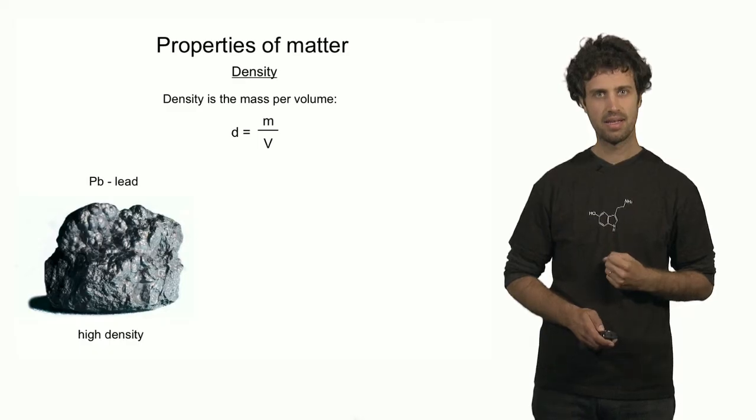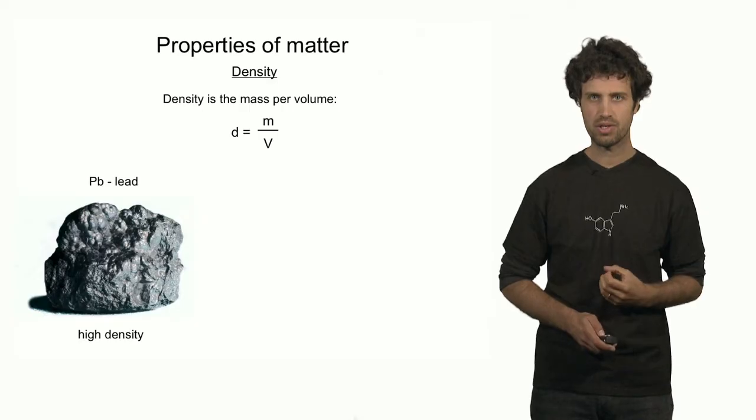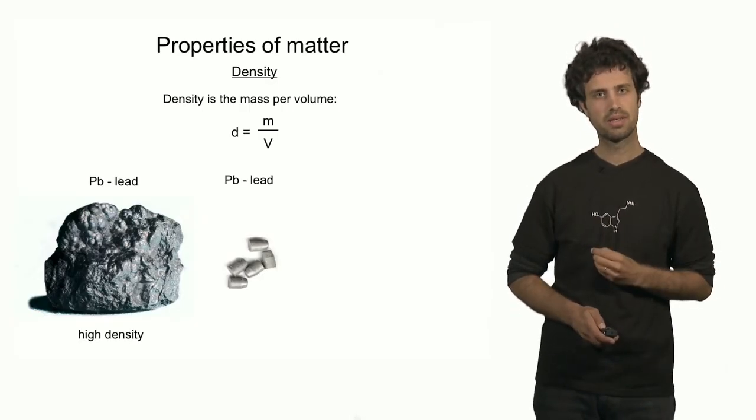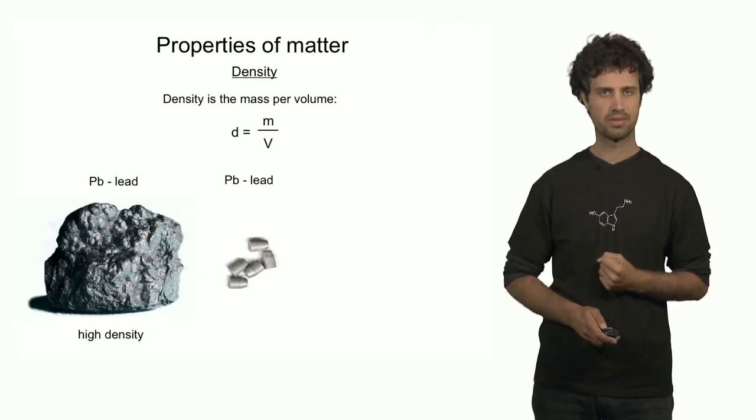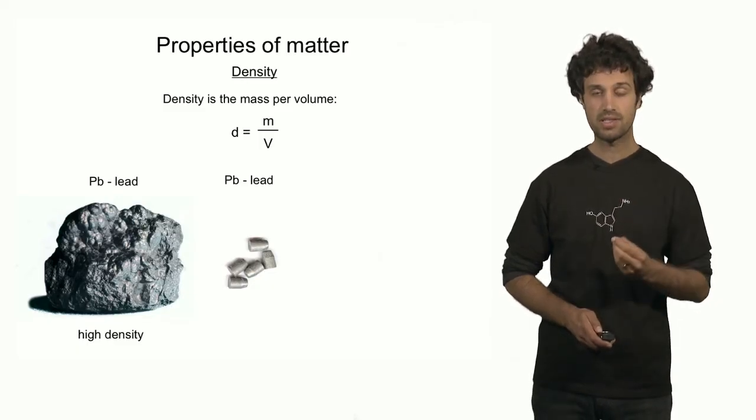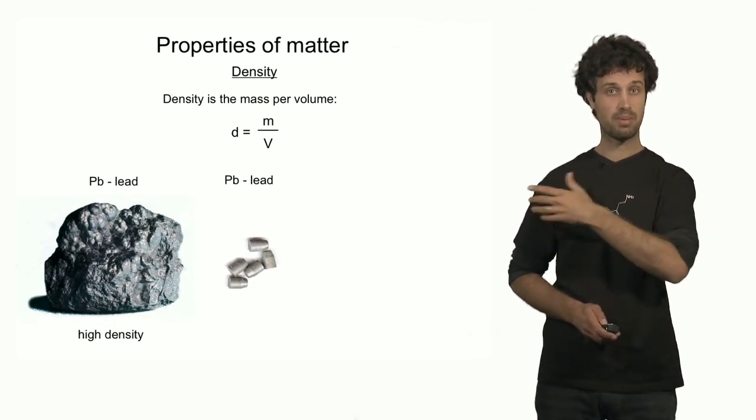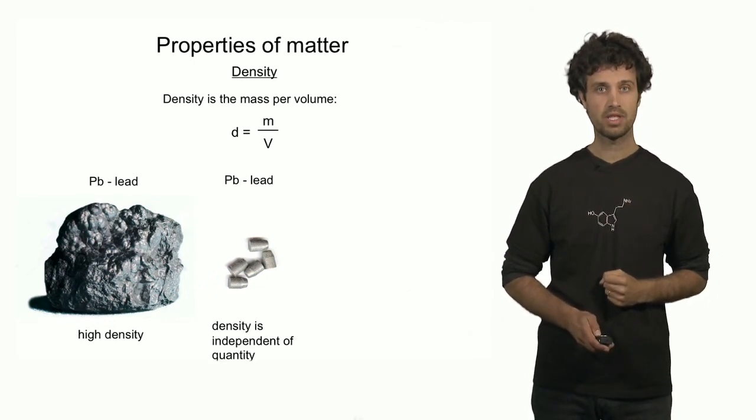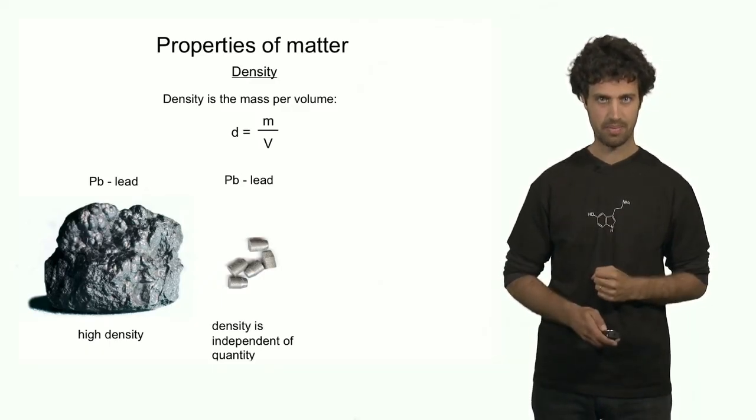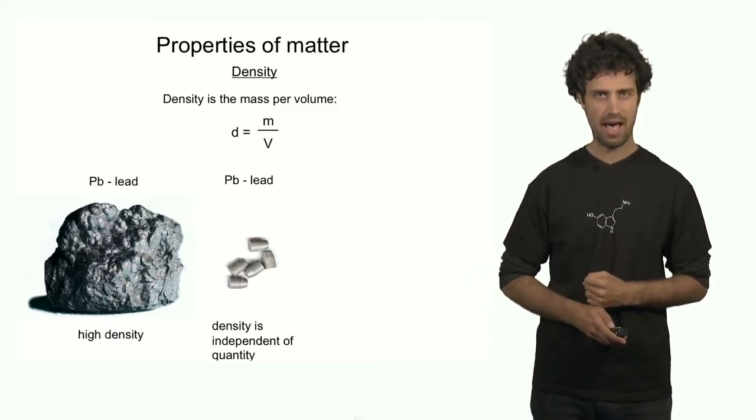This big chunk of lead is an example of a high density material. It has a high density because it has lots of mass per volume. These lead bullets next to it have a mass that is much lower, however, their density is exactly the same. The density is the same because the mass per volume is the same in the bullets as the mass per volume in the big chunk of lead next to it. This means that the density is not dependent on the quantity of material. It is a property of the material itself independent of how much you have of that material.